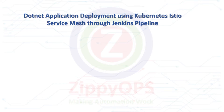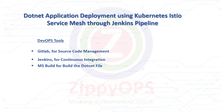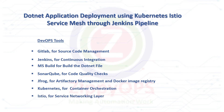The complete process is orchestrated through the Jenkins pipeline. The tools used in this .NET application deployment are: GitLab for source code management, Jenkins for continuous integration, MSBuild for building the .NET file, SonarQube for code quality checks, JFrog for artifactory management and Docker image registry, Kubernetes for container orchestration, Istio for the service networking layer, and Docker for containerization.